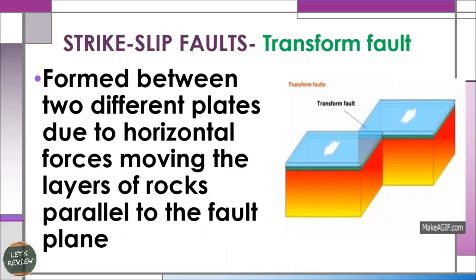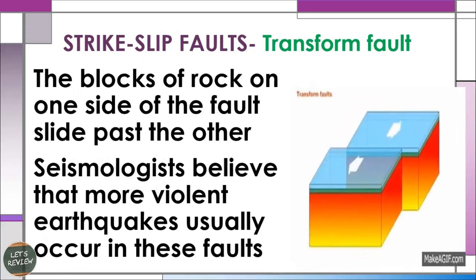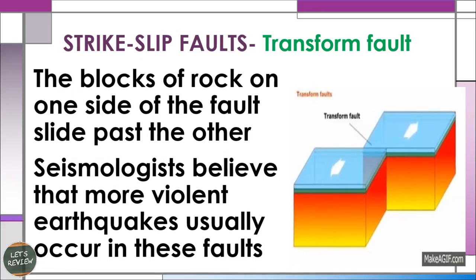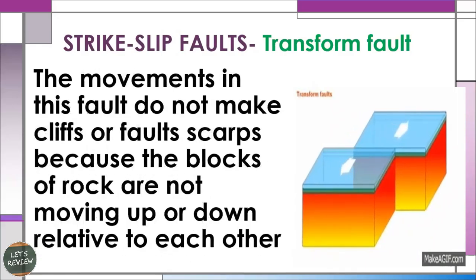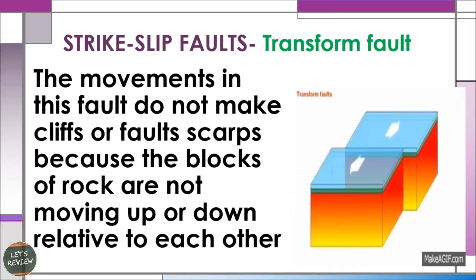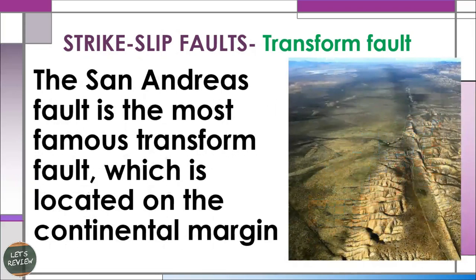The last type of fault is the strike-slip fault, also known as the transform fault. It is formed between two different plates due to horizontal forces moving the layers of rocks parallel to the fault plane. The blocks of rock on one side of the fault slide past the other. Seismologists believe that more violent earthquakes usually occur in these faults. The movements in this fault do not make lifts or fault scarps because the blocks of rock are not moving up and down relative to each other. The best example is the San Andreas Fault, which is the most famous and is located on the continental margin.